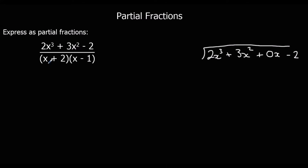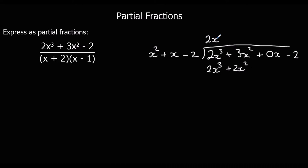We expand the denominator first: x times x is x squared, x times negative 1 plus x times 2 gives 1x, and 2 times negative 1 is negative 2 — so the denominator is x squared + x − 2. How many x squareds go into 2x cubed? That's 2x. Multiplying through: 2x times x squared is 2x cubed, 2x times x is 2x squared, 2x times negative 2 is negative 4x. Taking away: 2x cubed minus 2x cubed is nothing, 3x squared minus 2x squared is x squared, and 0 minus (−4x) is 4x.